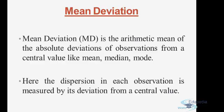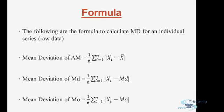Let's take up the formulas first, and then we will take some questions for practice. When you have raw data, the mean deviation from the arithmetic mean would be (1/n) × summation of mod(xi − x̄) for i from 1 to n. Similarly, the mean deviation from the median would be (1/n) × summation of mod(xi − Median), and in the case of mode, we simply replace the median with mode.